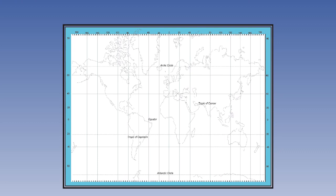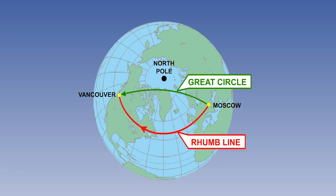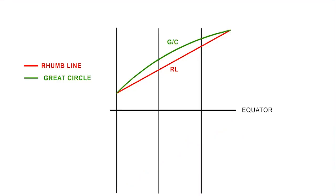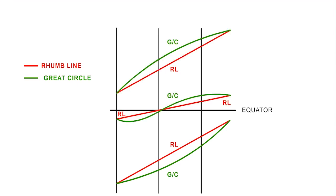How will great circles be portrayed on this chart? On the Earth, great circles are the most direct track. Therefore, they will always lie nearer the pole than the equivalent rum line route. So if the rum line is a straight line, the great circle must be a curve concave to the equator. The equivalent situation in the southern hemisphere will be similar. And where a rum line and a great circle cross the equator, the crossing point is the same, and the great circle is concave to the equator in both hemispheres.